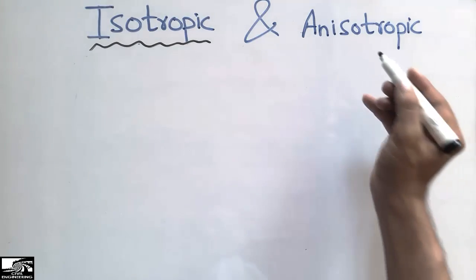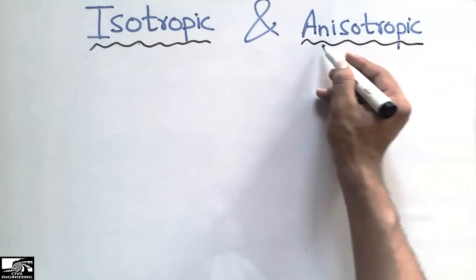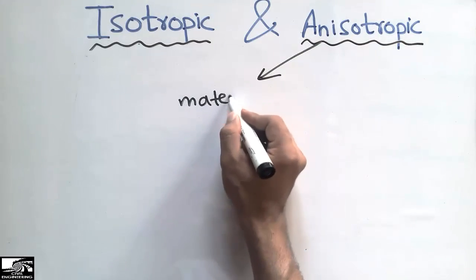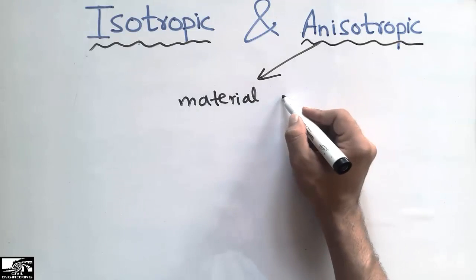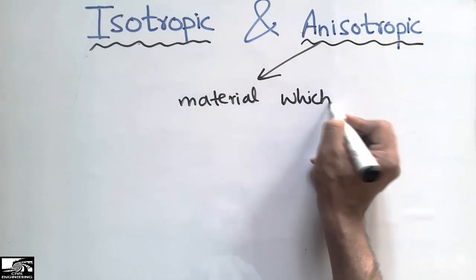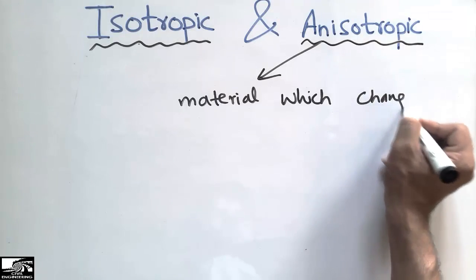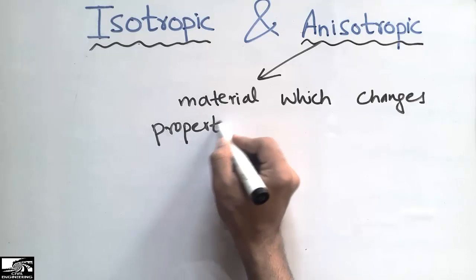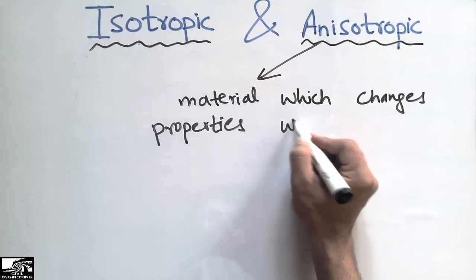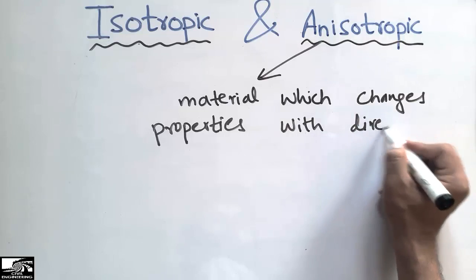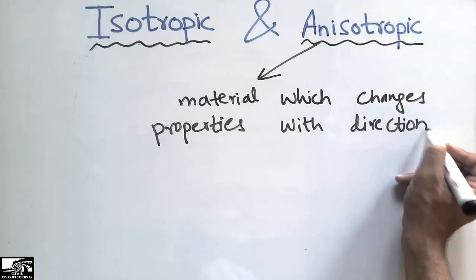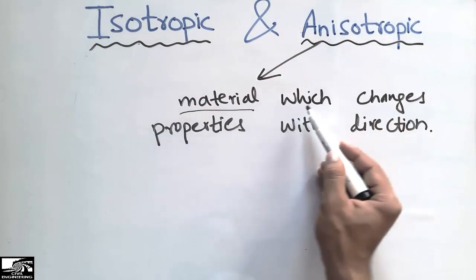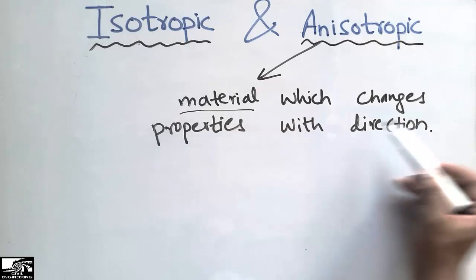Anisotropic materials are those materials which change their properties with direction. This is the opposite of isotropic material — anisotropic materials change their properties with direction.